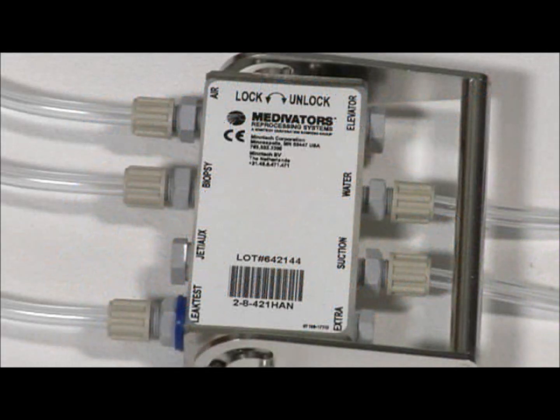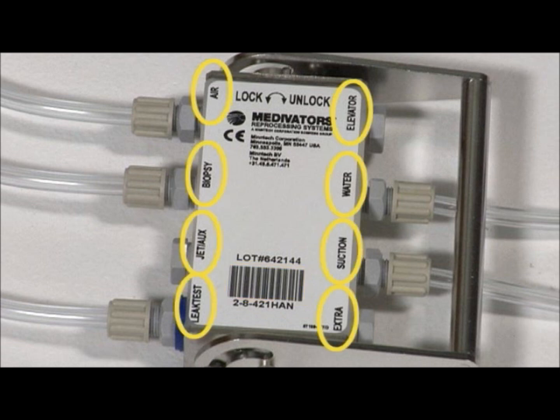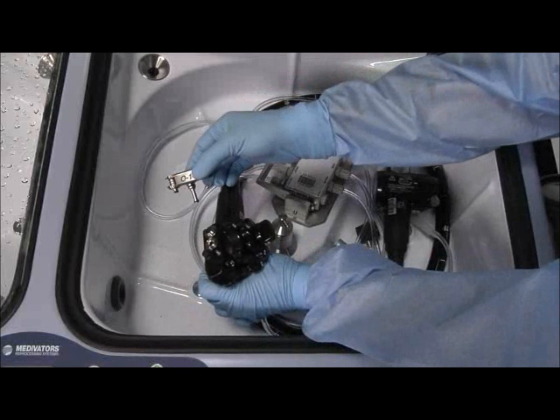Hookup connector blocks are labeled with hookup part number, barcode, and individual channels. The hookups also include a channel separator.